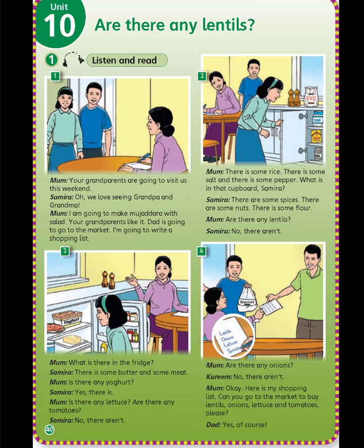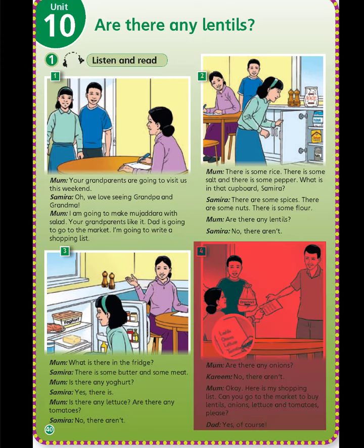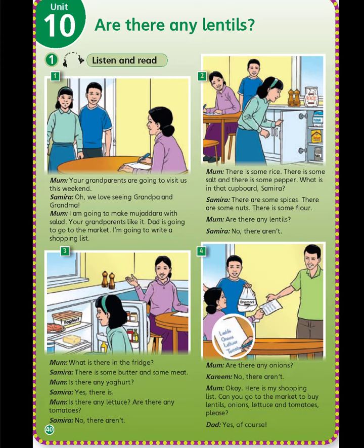Three. Mom: What is there in the fridge? Samira: There is some butter and some meat. Mom: Is there any yogurt? Samira: Yes, there is. Mom: Is there any lettuce? Are there any tomatoes? Samira: No, there aren't.